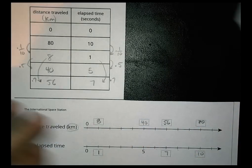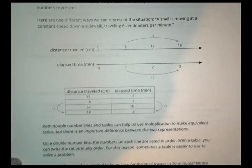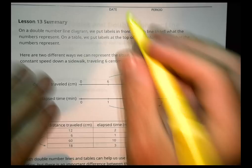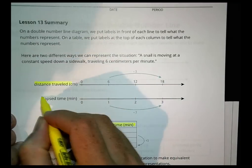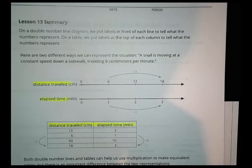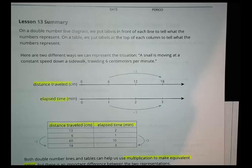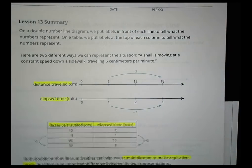Let's take a look at your summary of today's lesson. On a double number line, we put labels in front of a line, or we put labels on top of a column in tables. It's important to put those in the right place. Both double number lines and tables help us use multiplication to make equivalent ratios. But on a double number line, they're listed in order. In a table, you can put in any order you want. Just keep that in mind as you're working on your homework.